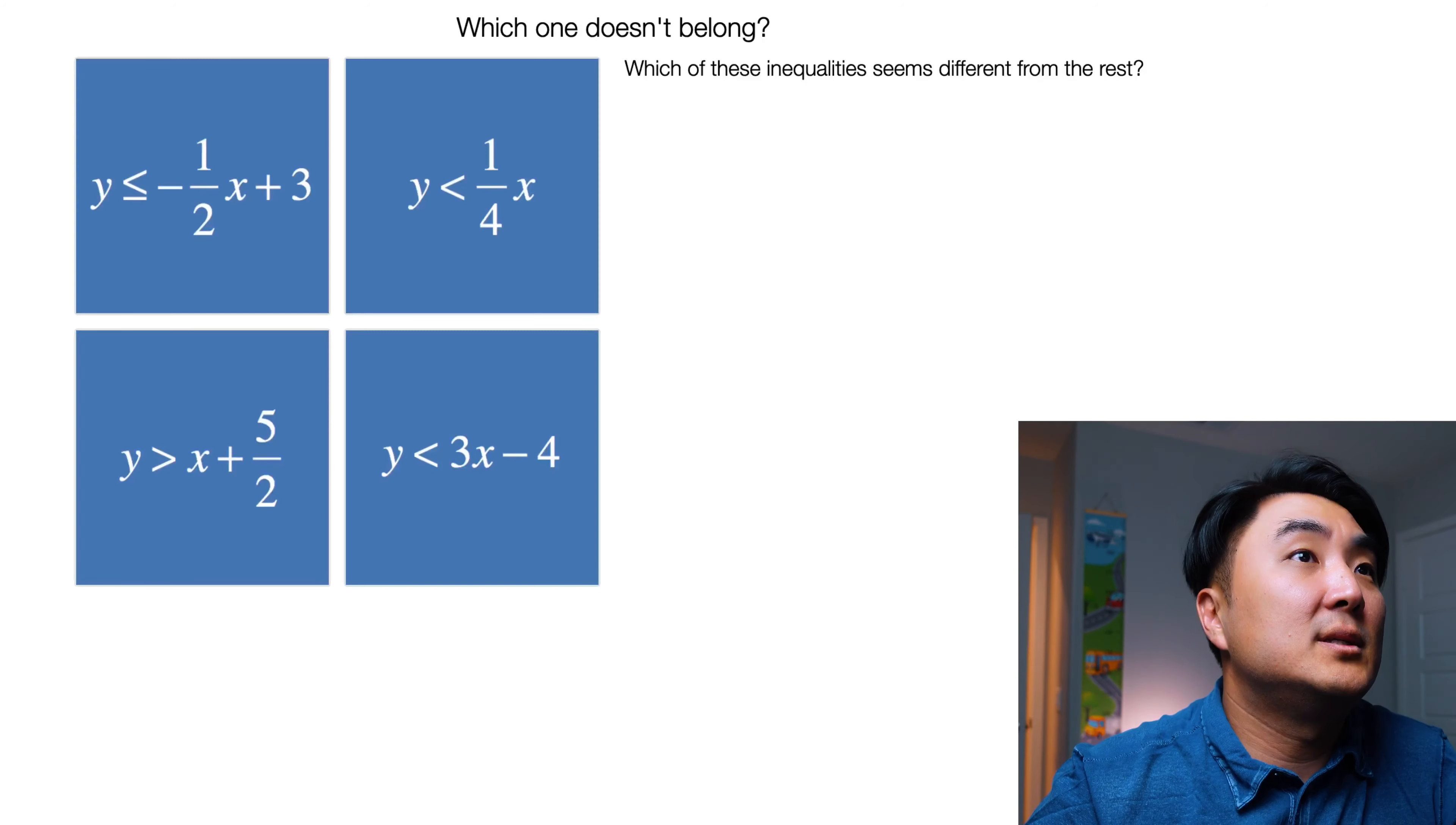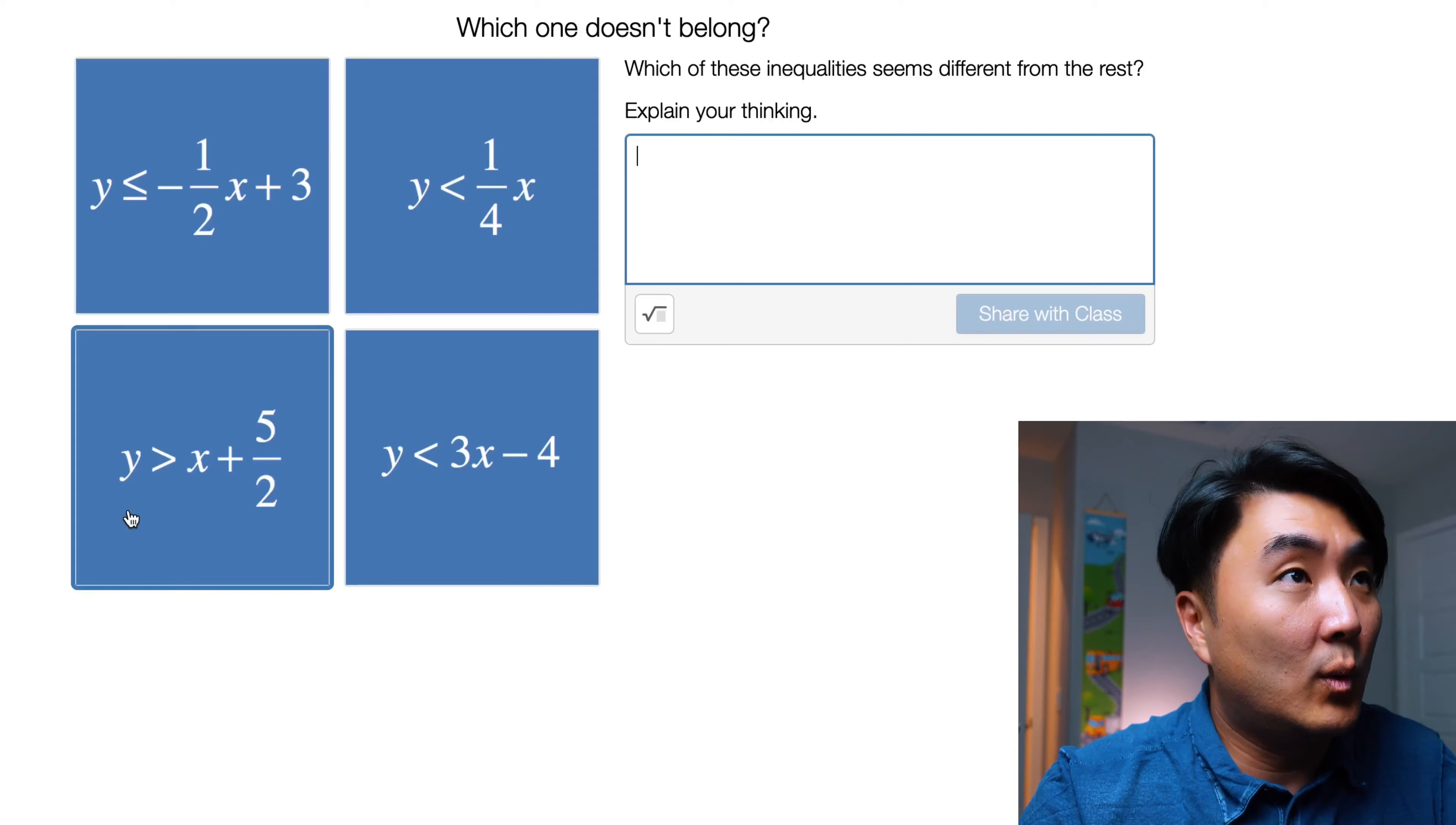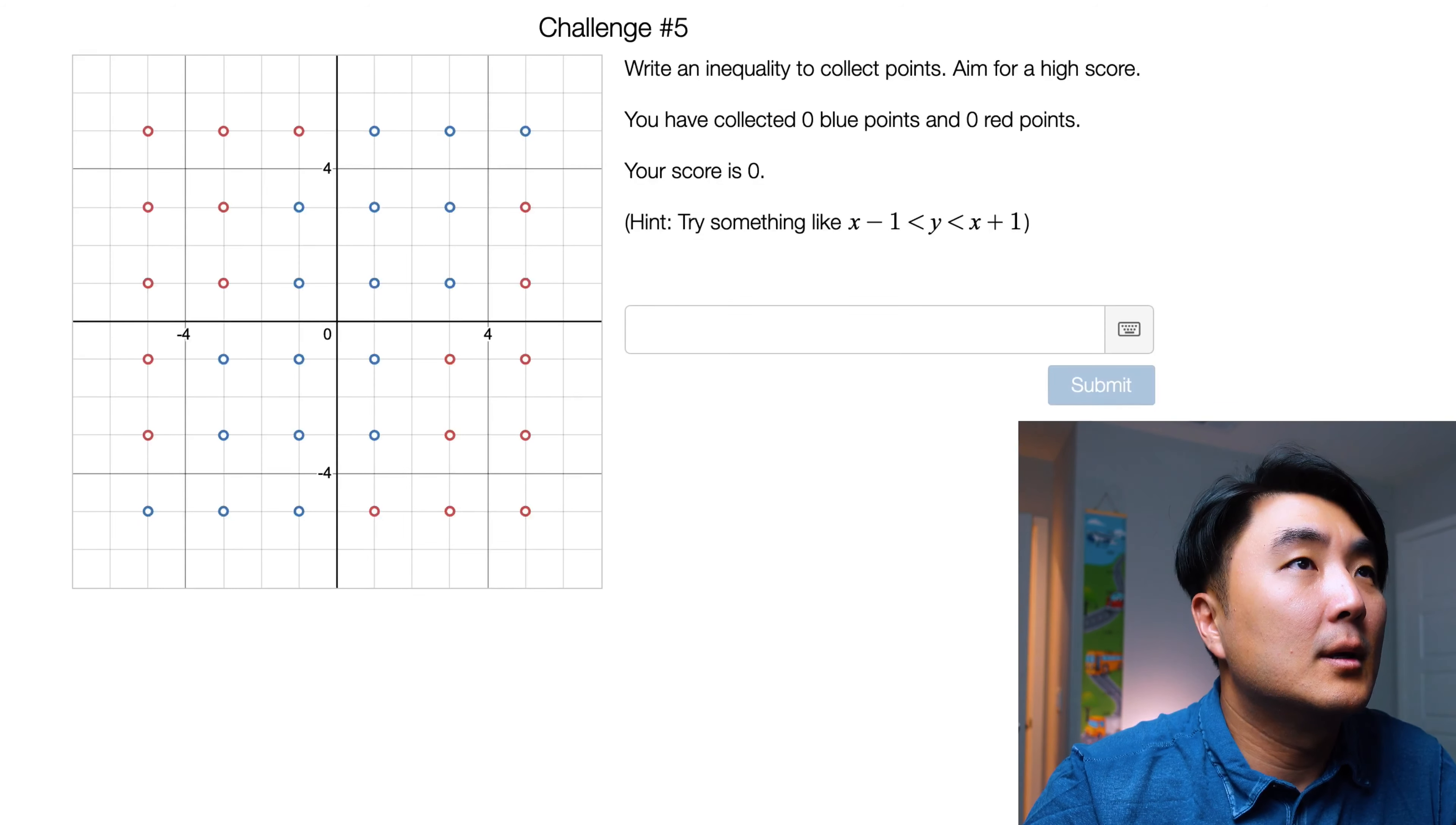Screen 11. Which one doesn't belong? Which one of these inequalities seems different from the rest? Okay, so whenever I give my students questions like these, there's more than one answer. So let's see. For example, if we pick this one, you can say this one is the only one that has that little line underneath the inequality. If you pick this one, you can say this is the only one with a fractional y-intercept, right? If you pick this one, you can say this one is the only one that doesn't have a y-intercept. If you pick this bottom right-hand one, you can say it's the only one that doesn't have a fraction in inequality. I don't know. Pick whichever one you want, right? And just determine which one doesn't belong, right? So screen 11. Let's go to screen 12.